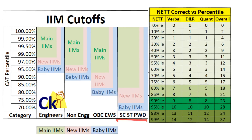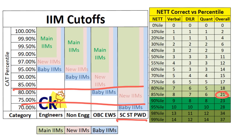For SC, ST, and PWD categories, main IIMs will be at around 85 percentile — you just have to clear the sectional cutoff and you will get the IIM call. I have students who got a call at 70 percentile SC category — she got IIM Indore call. So with 85 percentile that's 21 net correct, 75 percentile is 17 net correct, and 70 percentile for baby IIMs is around 15 net correct. This is your target — for those who gave the exam this year, and for those giving it next year, this will act as a benchmark.